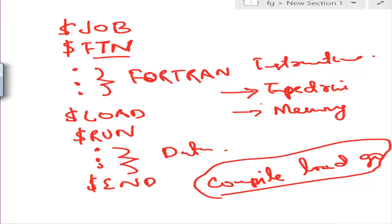If the compiled object code is put to the tape drive rather than directly into memory, then a dollar LOAD command comes into play. The monitor regains control after the compile operation and invokes the loader, which loads the object program from the tape drive into memory — into the space where the compiler was. If you directly put the object code into memory, then you don't need to load separately — you just go and execute, telling the processor that the object code is in memory and to execute the first line of code.